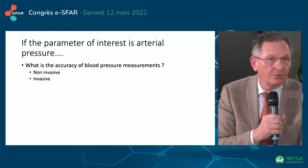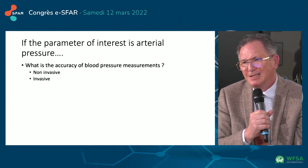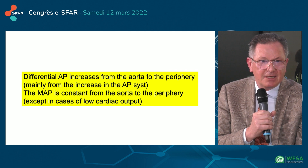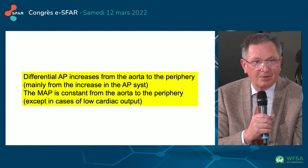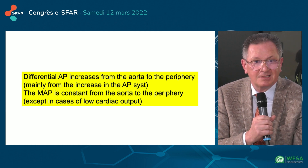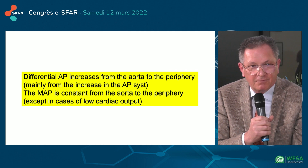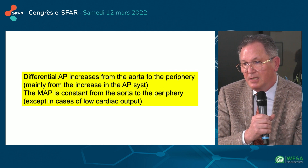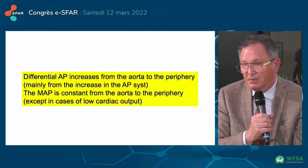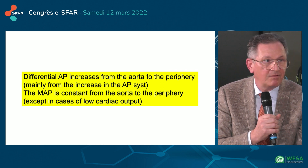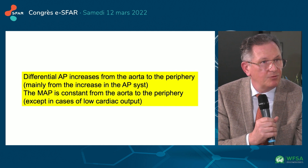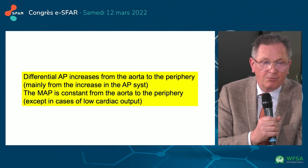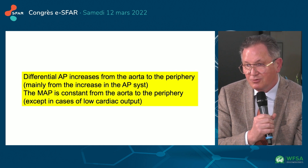If our parameter of interest is arterial blood pressure, what is its accuracy? There is a very large amount of literature on this. Everybody imagines that invasive blood pressure monitoring is reliable and accurate, but this is not the case — it is supposed to reflect central blood pressure, but it does not, because you have amplification of the systolic and a possible decrease in diastolic with increased pulse pressure from the aorta to the periphery at the radial artery. MAP values should be constant, except in low cardiac output states. So if you put a closed loop on a given MAP value taken from the radial artery, you have no information about what happens in the central circulation.